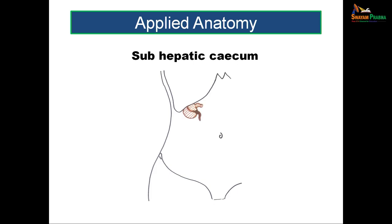Sub-hepatic cecum and appendix occurs when there is malrotation or non-descent of the cecum. During normal gut rotation, the cecum moves from the left iliac fossa through the umbilical region to just below the liver, then descends to the right iliac fossa. If descent is arrested, the cecum and appendix remain sub-hepatic. Inflammation of an appendix in this position can mimic cholecystitis, making diagnosis confusing.